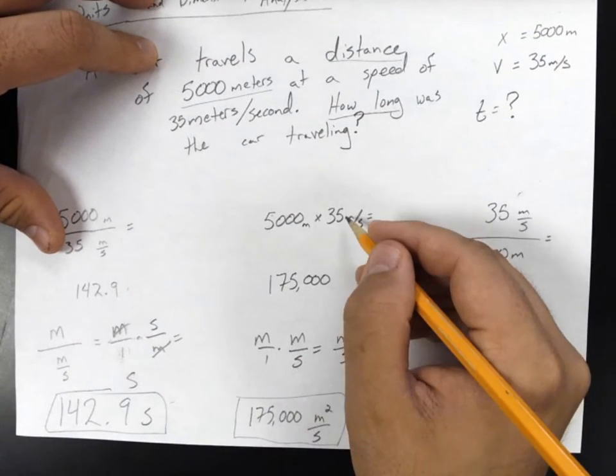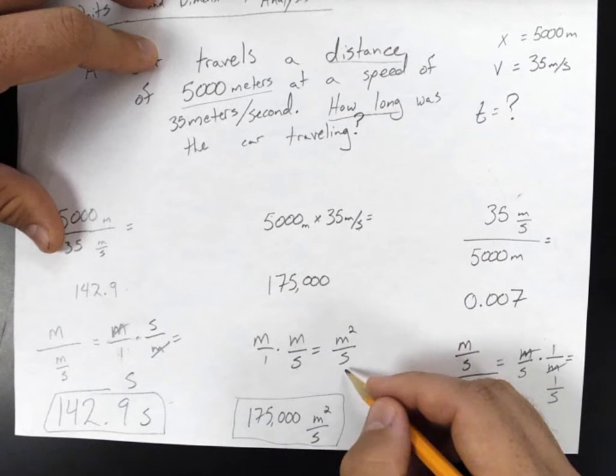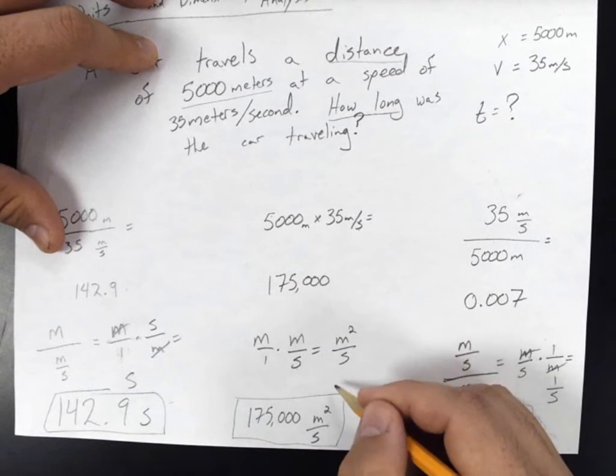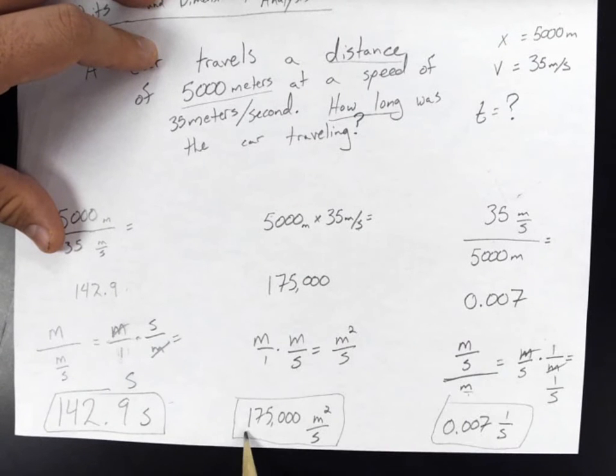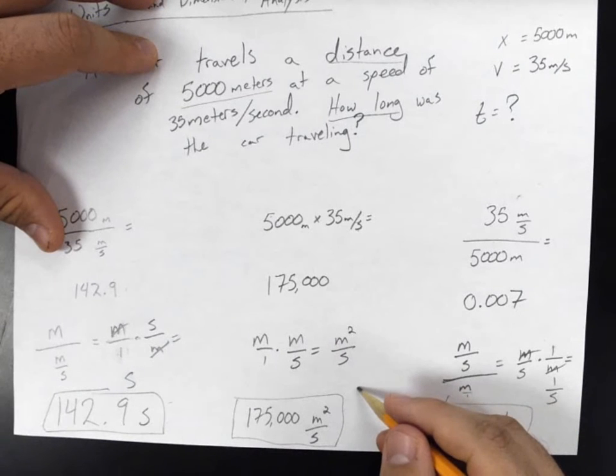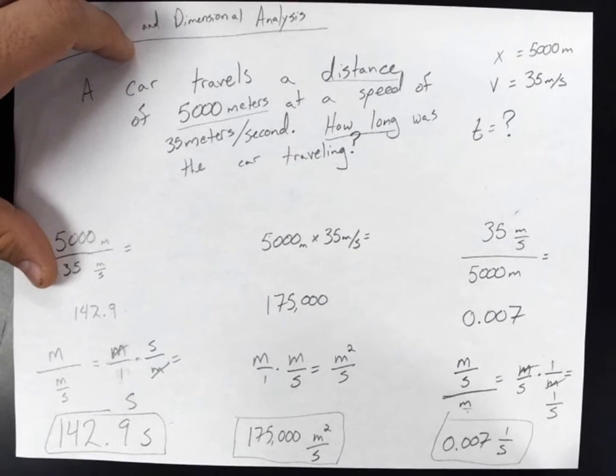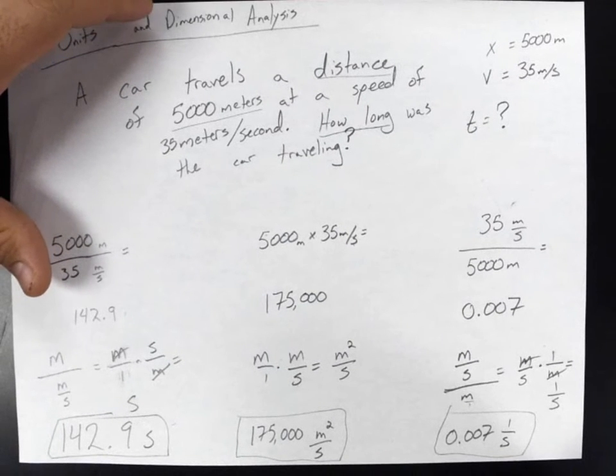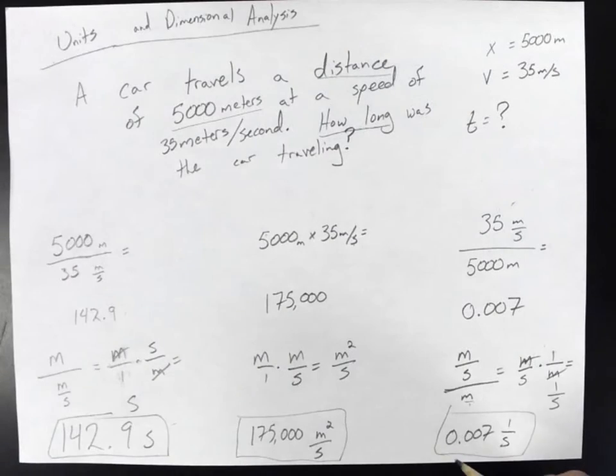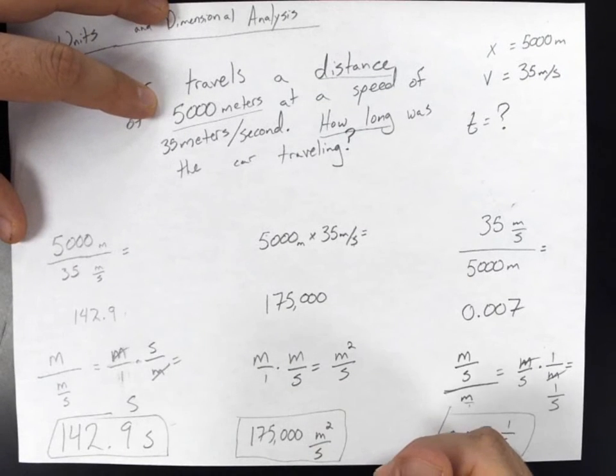Times meters per second. That leaves us with a unit of meters squared per second. So 175,000 meters squared per second. When I think of time, I don't think of the unit meters squared per second. I don't say, how long did it take you to get through the hallway? Well, it took me five meters squared per second. That doesn't make any sense at all. So that means that this one is probably also incorrect.